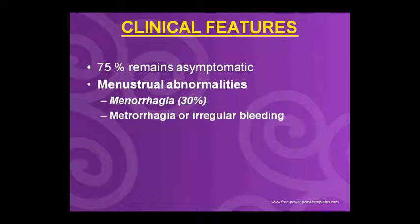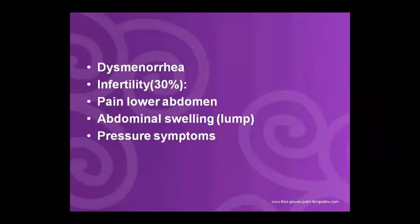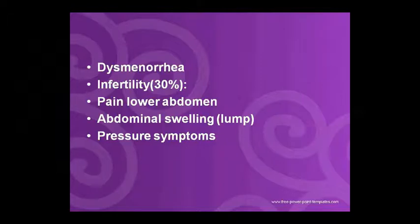Regarding the clinical picture: 75% of cases are asymptomatic. In the remaining cases, menstrual abnormalities such as menorrhagia, metrorrhagia, and irregular bleeding can be seen. Pain can occur due to torsion of a pedunculated tumor. Pelvic pressure on adjacent viscera, dysmenorrhea, infertility, lower abdominal pain, and abdominal swelling or lump with pressure symptoms may also be present.